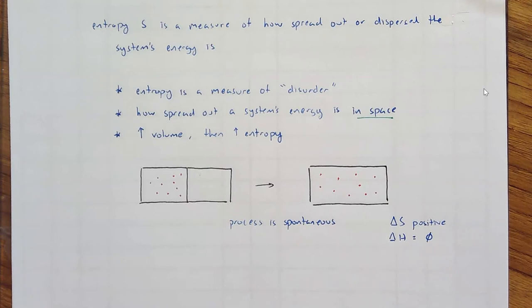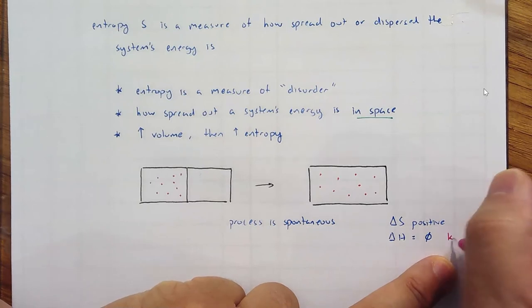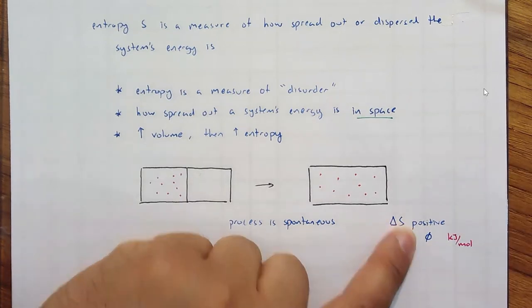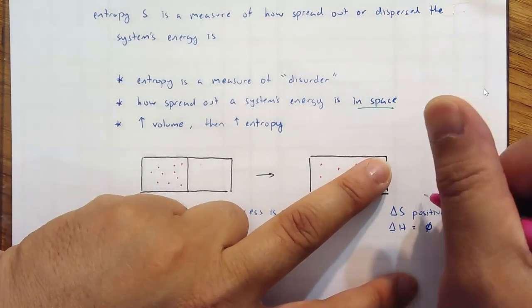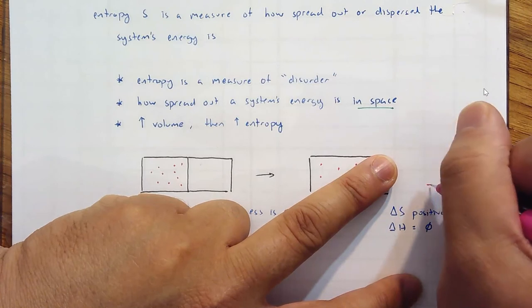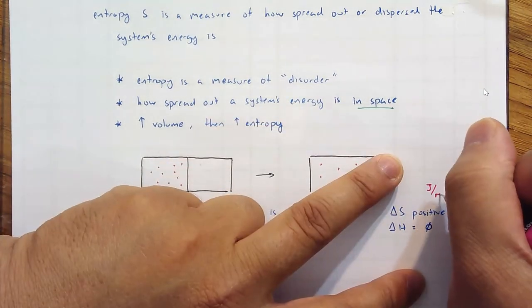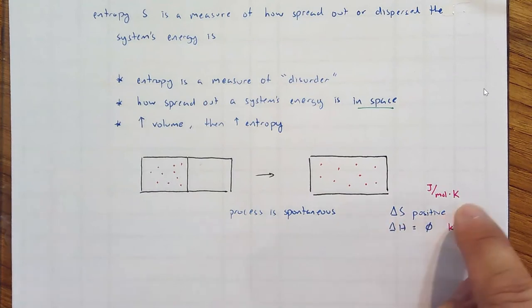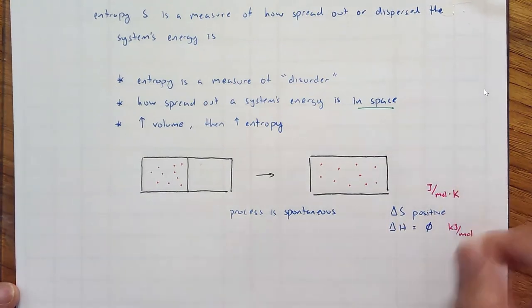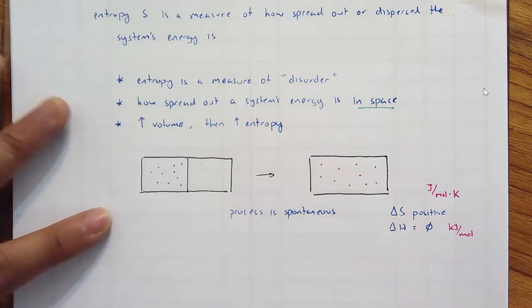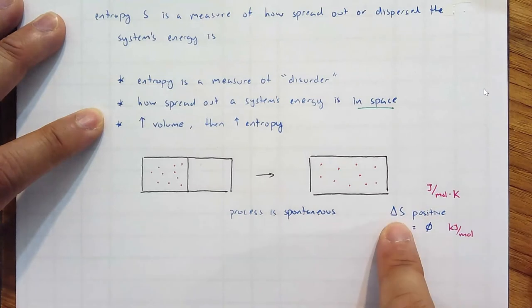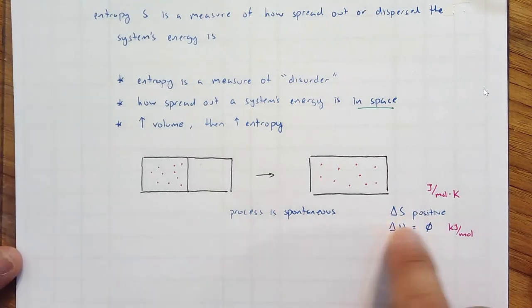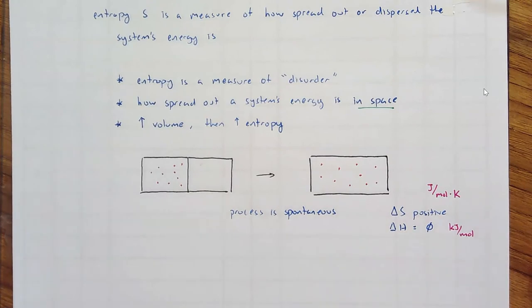Let me mention units. Delta H is in kilojoules per mole. Delta S is trickier - it's expressed in joules per mole, and there's actually a temperature component. In a future video, we'll look at how to treat the values and units of delta S.